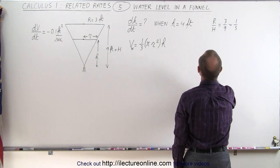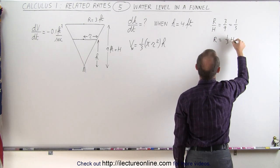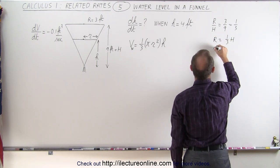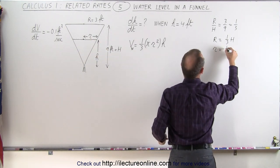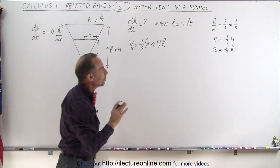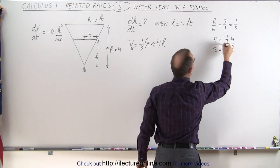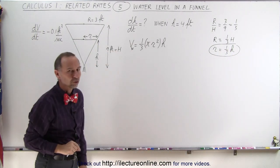So we can say that r is equal to one-third h, which means that the small r, the radius of where the water level is at, is going to be equal to one-third the height of the water level. And now we have a relationship between r and h that allows us to eliminate r inside the equation. So we'll make that substitution.